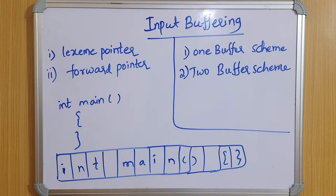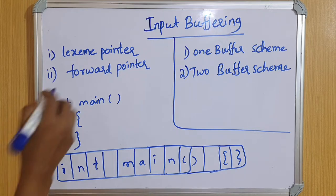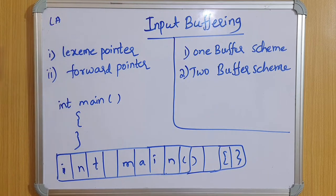So what is input buffering? The main task is that the lexical analyzer will read the source program character by character and produce a stream of tokens. In order to read these tokens, the lexical analyzer mainly uses two pointers.